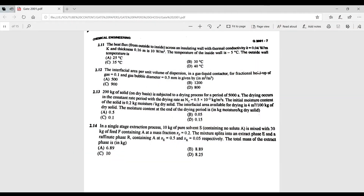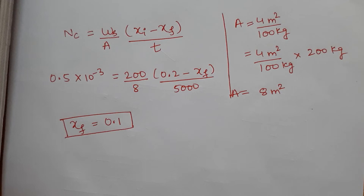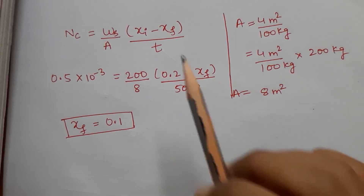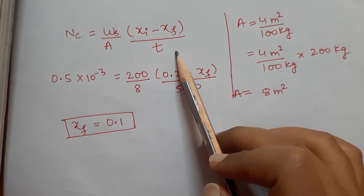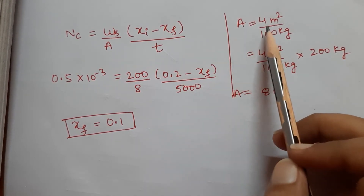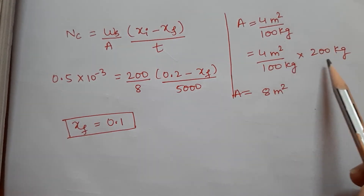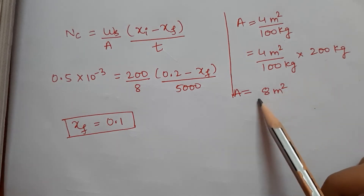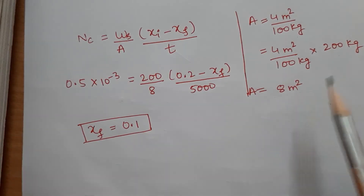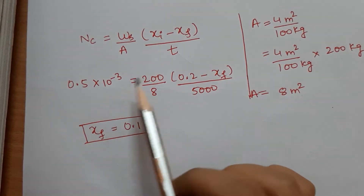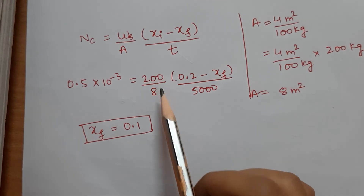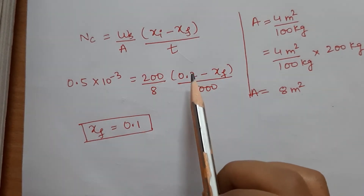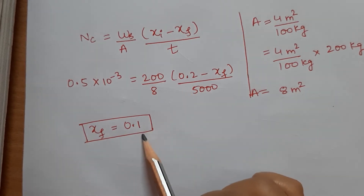Question 2.13: 200 kg of solid is subjected to a drying process for 5000 seconds. All values are given and we must find the moisture content at the end of the drying period. Note that the area is given as 4 m²/100 kg, so multiply by mass to get area in m². Substituting rate, mass, area, drying time, and initial moisture content into the drying equation, the final moisture content is 0.1.